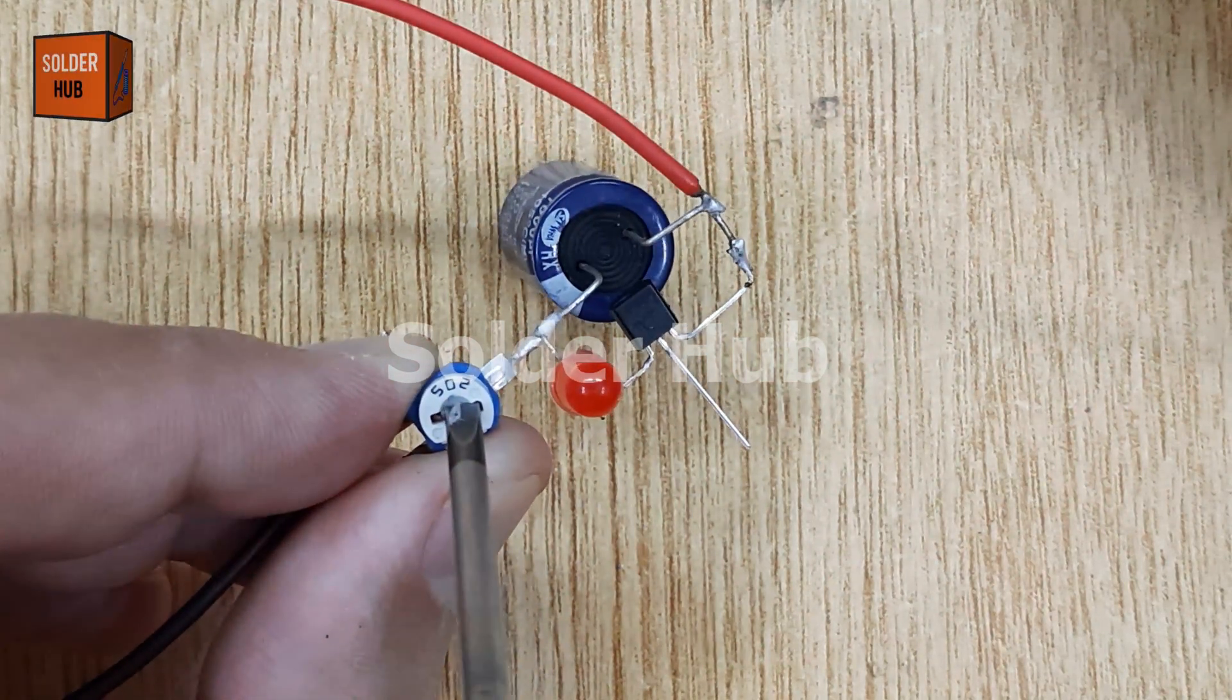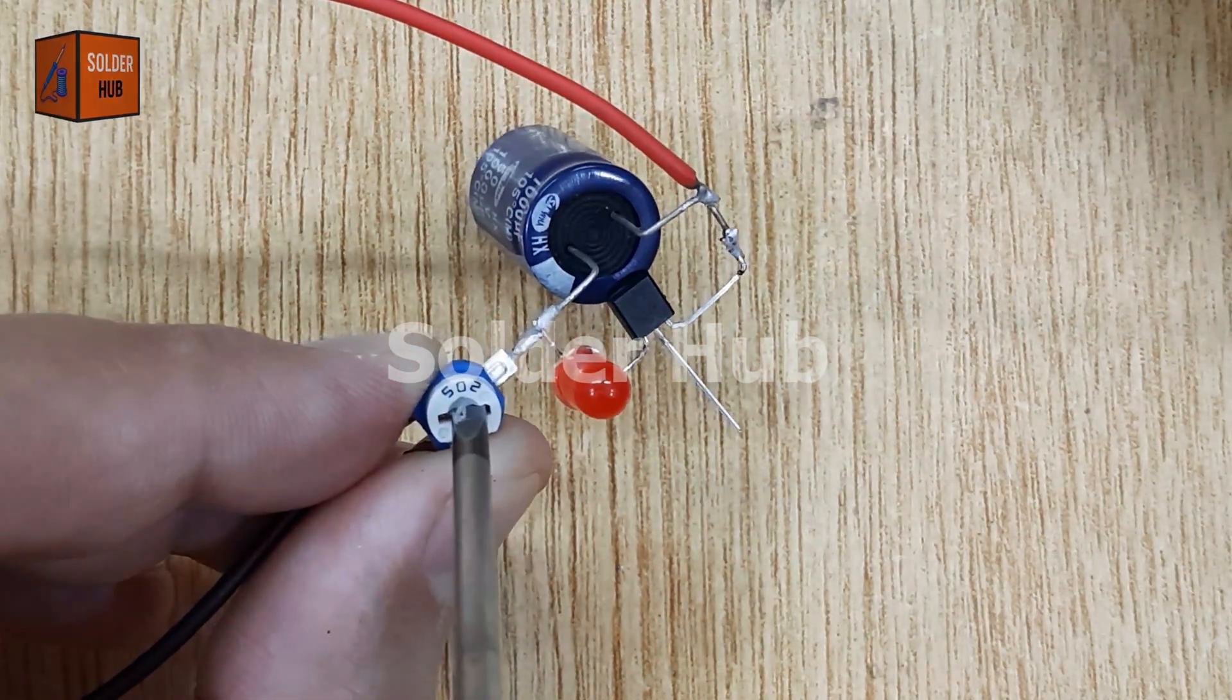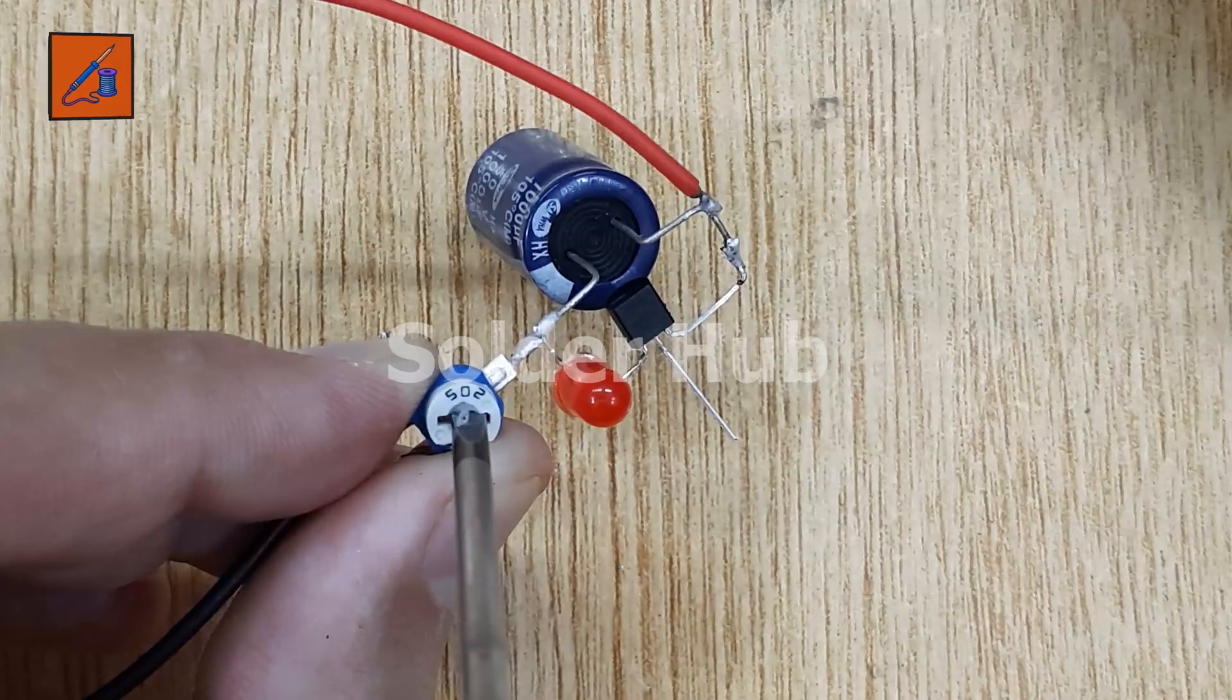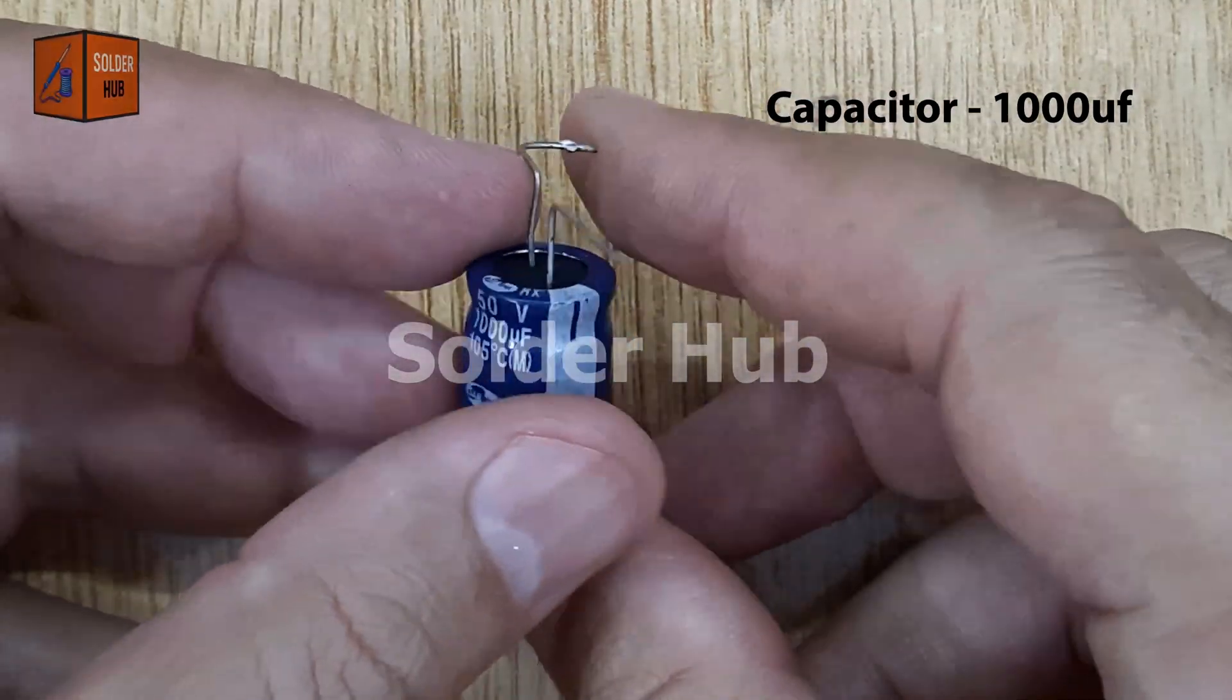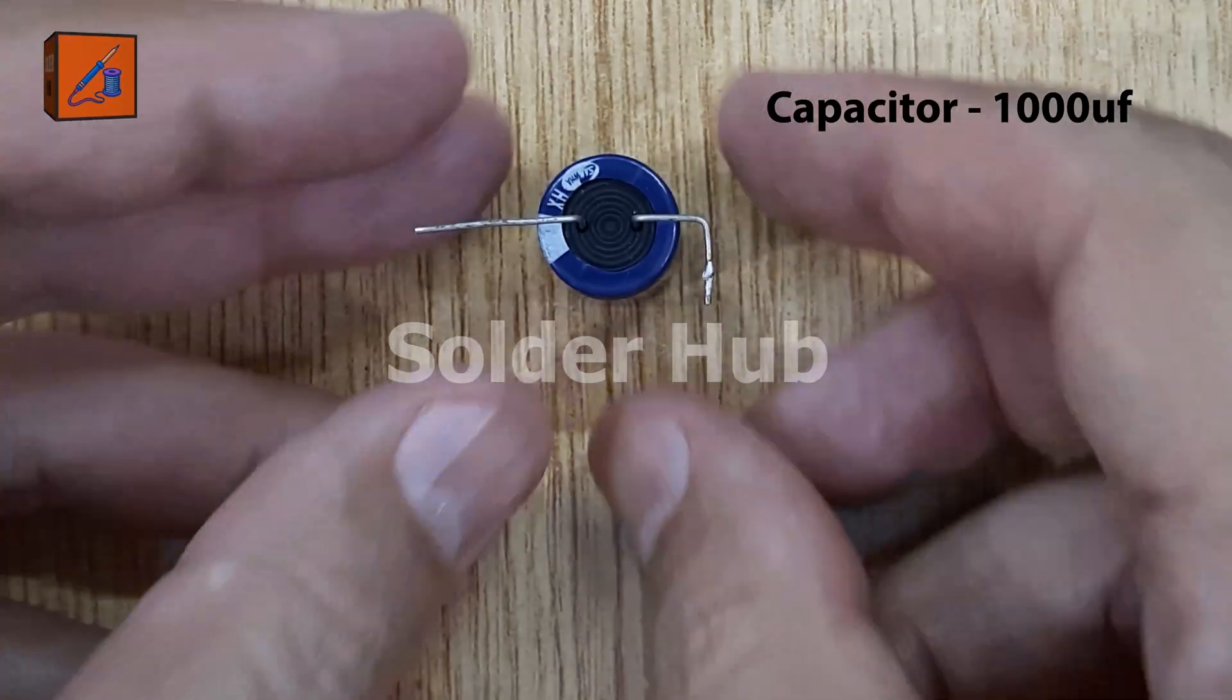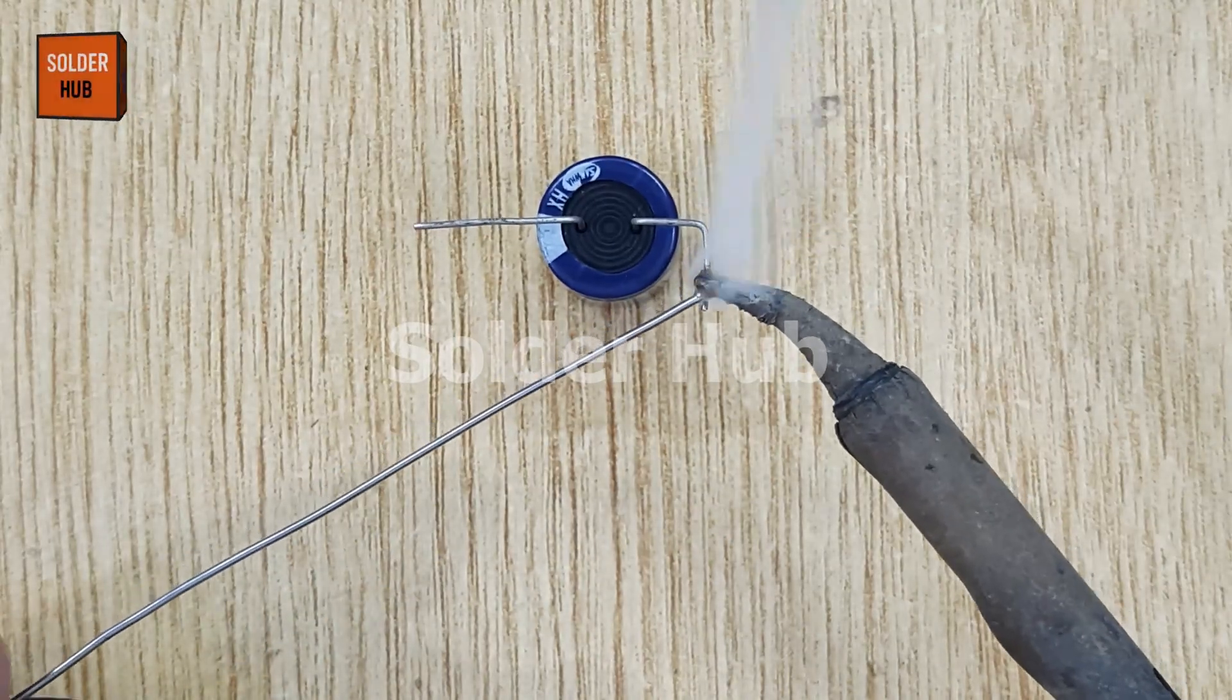Today, I'm going to build an adjustable single LED strobe light circuit using a few basic electronic components. To start, you'll need a 1000uF capacitor. I begin by applying a small amount of solder to its positive terminal to prepare it for connections.